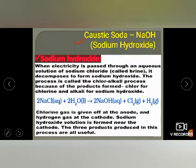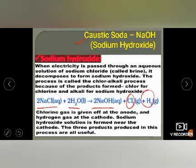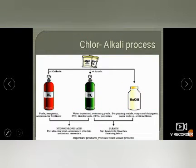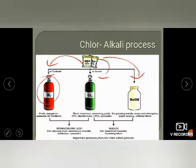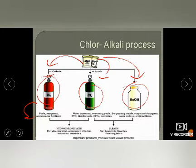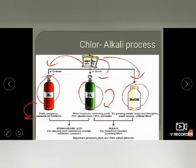Caustic soda, NaOH, is made from NaCl and H₂O in a reversible reaction. When NaOH is formed, chlorine and hydrogen are also produced. This is known as the chloralkali process, in which salt gives hydrogen, chlorine, and NaOH. Hydrogen is used in fuel, making ammonia, and fertilizers. Chlorine is used for water treatment, in swimming pools, PVC, disinfectants, and chlorofluorocarbons and pesticides.